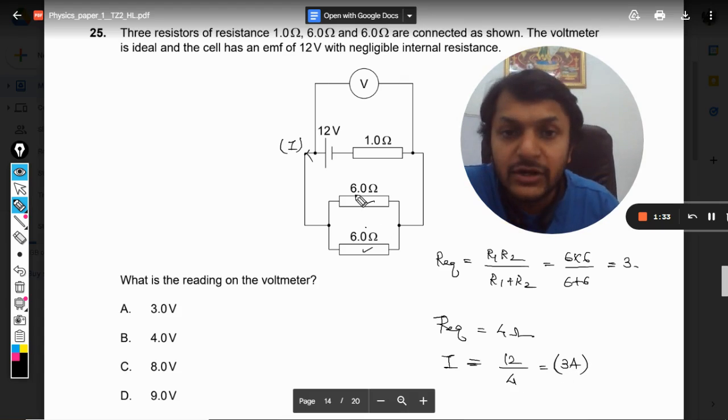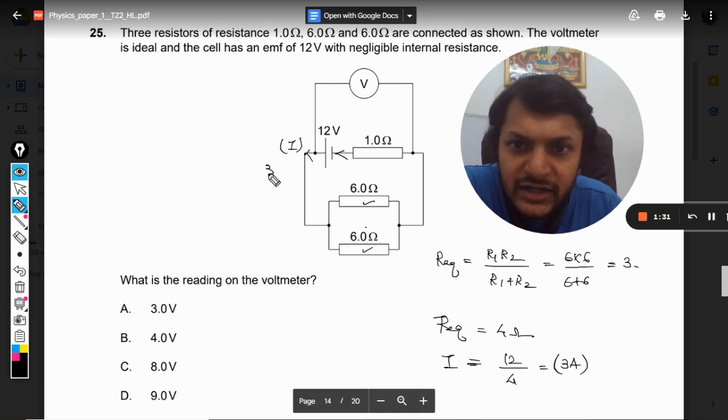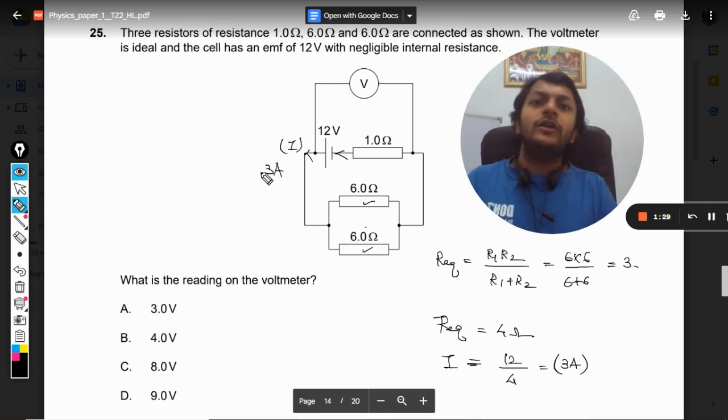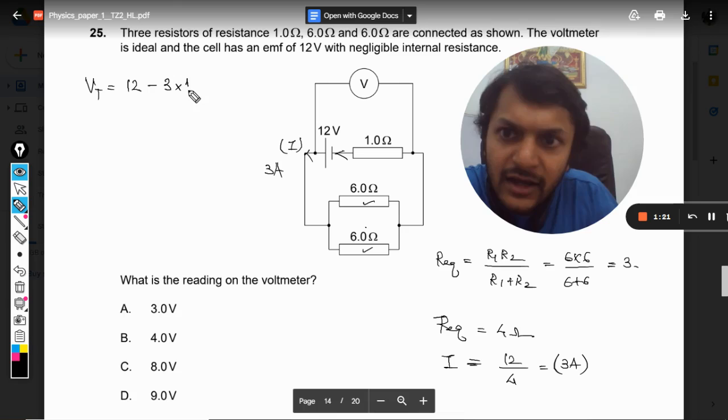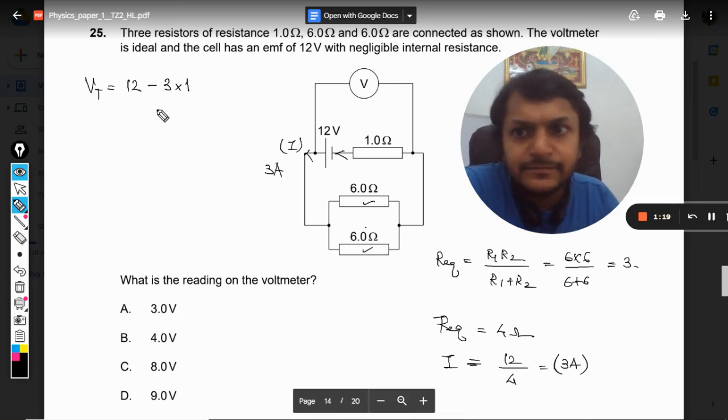So what will be the net current? Current will be 12 divided by 4, so it is going to come out to be equal to 3 ampere. So 3 ampere current is being withdrawn from the battery. So what is the terminal voltage? What is the terminal voltage?